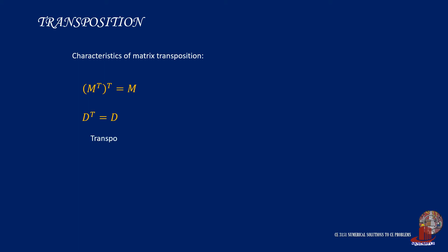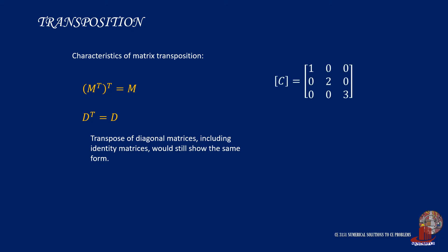The second characteristic states that the transpose of a diagonal matrix D will reflect its original form. For example, diagonal matrix C, when transposed, has elements that remain in their original arrangement.